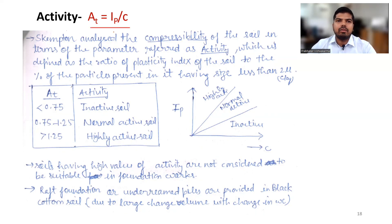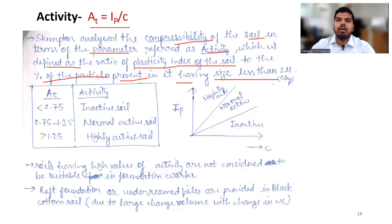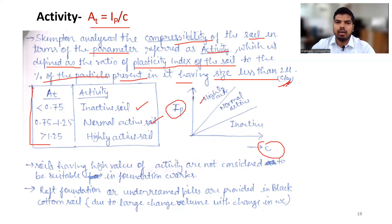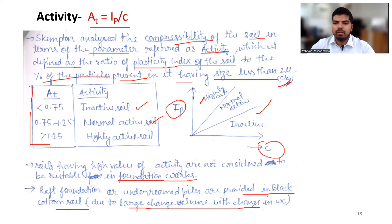Activity is defined as the ratio of the plasticity index of soil to the percentage of particles present having size less than 2 microns (i.e., clay fraction). These ranges of activity represent the type of soil. Plotting activity against percentage of clay, the top line represents high activity soil and lower lines represent normal soil. Soils with higher activity values are not considered suitable for foundation work, and raft foundations or under-reamed piles are provided in black cotton soil due to large changes in volume with water content.